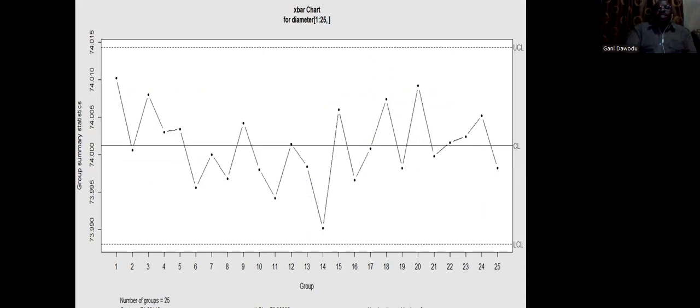This will be the result of the chart. This chart tells you that everything is within control. There's no sample point outside the expanse of lower control limit and upper control limit.